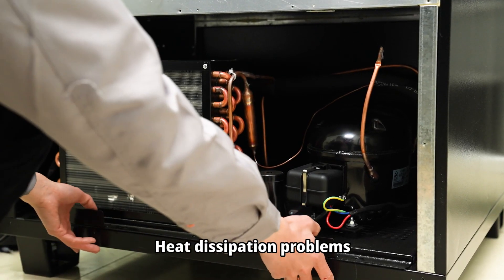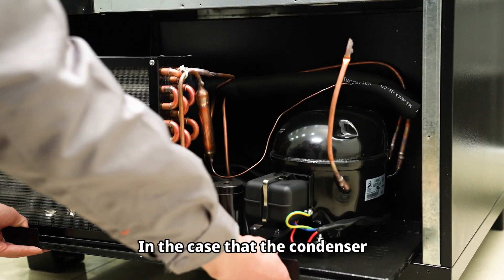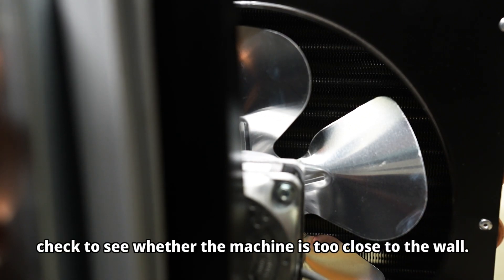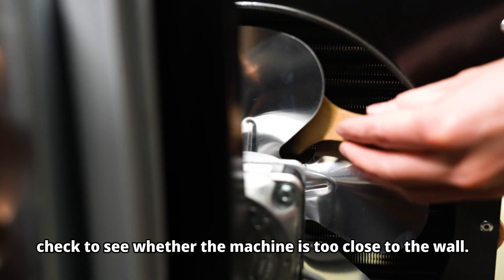Heat dissipation problems: In the case that the condenser and compressor are working normally but the cooling effect is not normal, check to see whether the machine is too close to the wall.